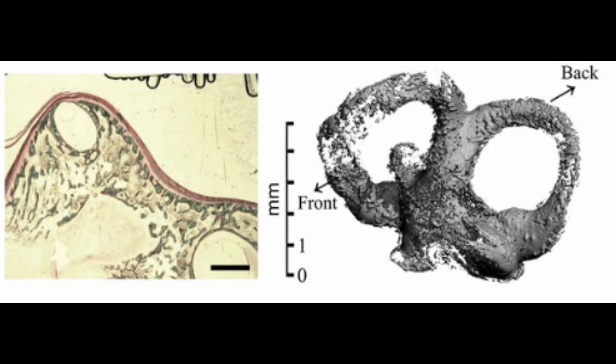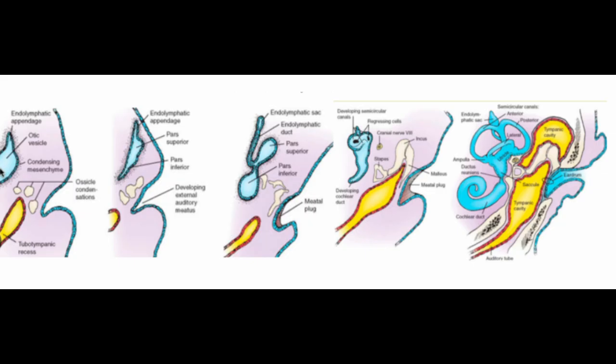The cartilaginous otic capsule also forms vacuoles that coalesce into fluid-filled perilymphatic spaces. So inside the otic vesicle there is endolymph, and around the otic vesicle — in the bony labyrinth — there is perilymph. This diagram shows the development of the inner ear in association with the middle ear and external ear.